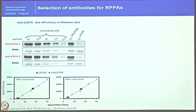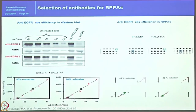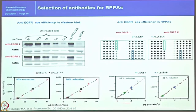To illustrate: from the same lysate with EGFR downregulated, a western blot in serial dilution using two different antibodies both showed concentration-dependent signals for EGFR, and western blot showed 80% downregulation after adding siRNA. However, when RPPA was performed with the same samples, antibody one detected 48% downregulation and antibody two detected 83% downregulation — a major discrepancy despite both antibodies appearing to work in western blot.